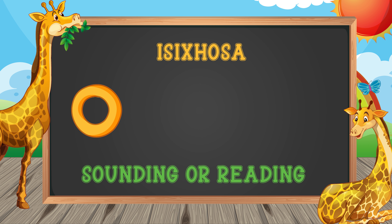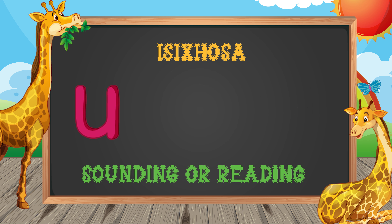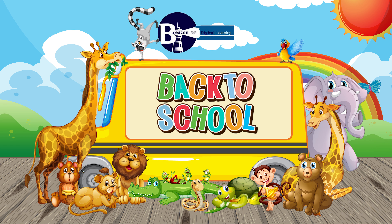Letter O is sounded as 'o', as in 'orange.' Letter U is also sounded as 'o', as in 'orange.'